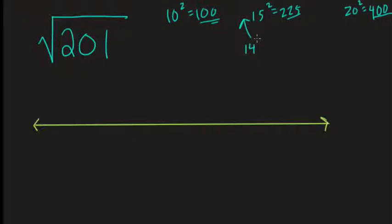Let's try 14. Well, 14 squared is 196. So that tells me that there's no whole number here squared that equals 201. But it's certainly above 14 and below 15, right?